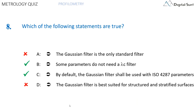The correct answers are B and C. Some parameters, such as the P parameters calculated on the primary profile, do not need a lambda C filter, but only a lambda S filter. The Gaussian filter is the default filter for parameters of ISO 4287, but it is not the only filter. You may want to specify the robust Gaussian filter or the spline filter — in this case it has to be written explicitly on the drawing. Structured and stratified surfaces do not work well with the Gaussian filter, which is why it is better to use a robust filter or the double Gaussian filter in this case.